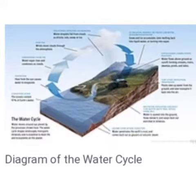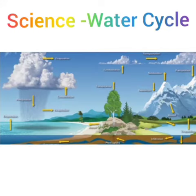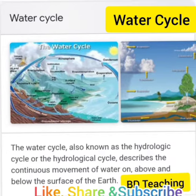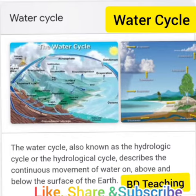What is water cycle? It is a system of how water moves from earth to air and from air to earth in a cycle manner. The water cycle, also known as the hydrologic cycle or the hydrological cycle, describes the continuous movement of water on, above, and below the surface of the earth.